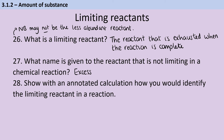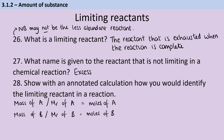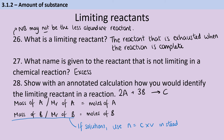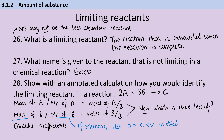To work out the limiting reactant, first work out the number of moles. If A reacts with B, work out moles of each by doing mass ÷ relative formula mass. If looking at solutions rather than solids, use moles = concentration × volume. Then look at the coefficients in the chemical equation — for example, 2 moles of A reacting with 3 moles of B. Divide the moles of each by their respective coefficients, then whichever is smaller is the limiting reactant.